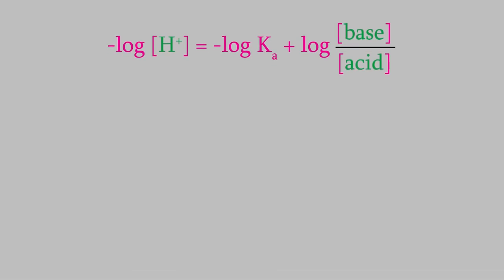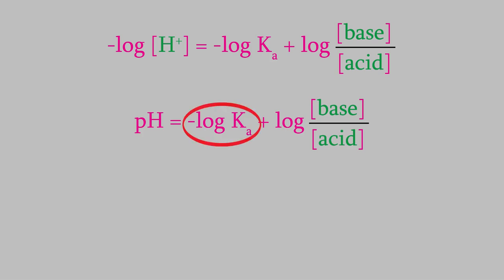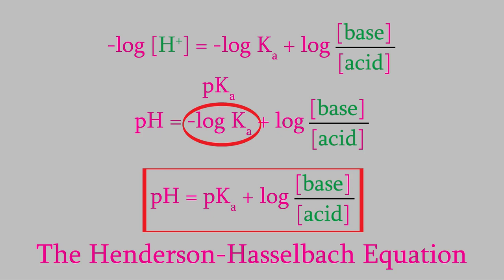It might not seem like it yet, but it turns out that this is a really helpful equation. Here's why. If you look at the left side of the equation, you should recognize it. That's just the pH. And this term, the negative log of Ka, is called the pKa. So, we have the pH equals the pKa plus the log of the concentration of the base over the acid. This is called the Henderson-Hasselbalch equation, and it's by far the easiest way to figure out the ingredients we need to make a buffer.